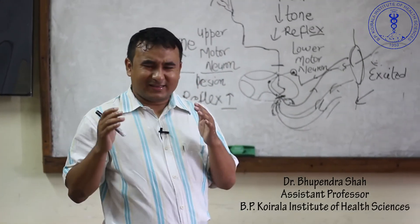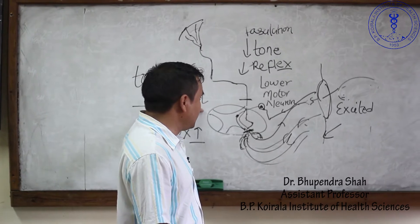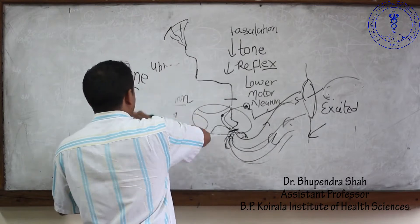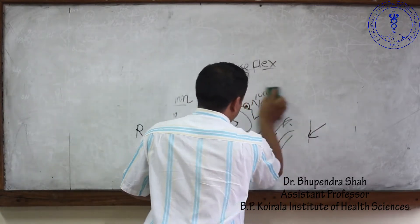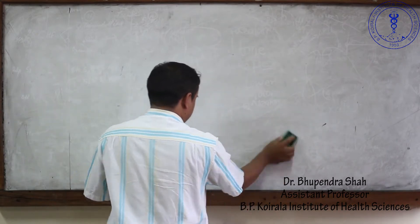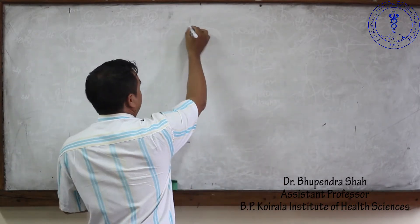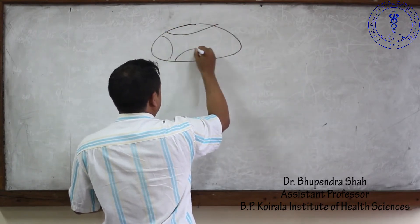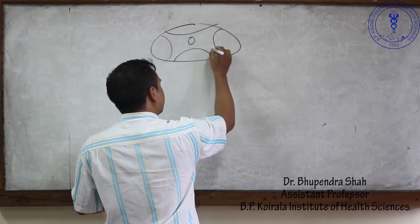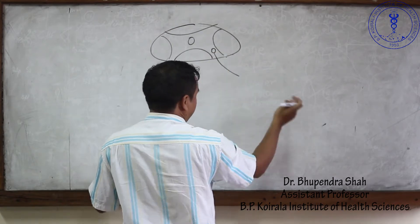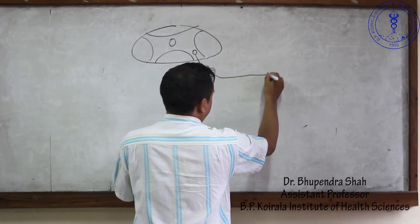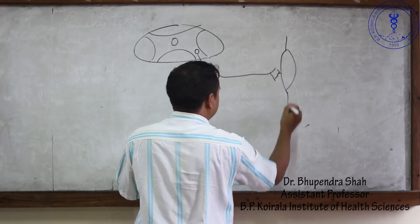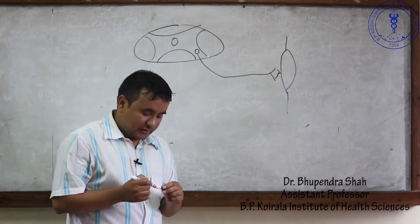So till here I think people know how you are going to differentiate between the upper motor neuron and the lower motor neuron. Then after that we will go one by one to locate the lesion of the lower motor neuron. From here the lower motor neuron starts, and probably roots make a plexus. I will make a simple diagram here.